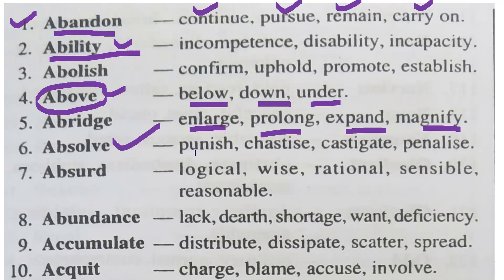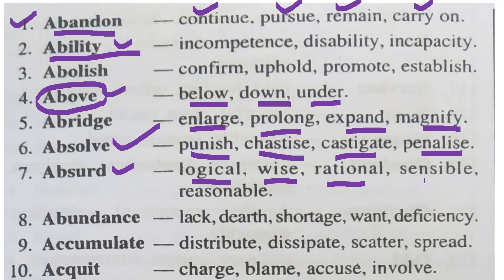Number six — absolved. The antonym of absolved is: punished, chastise, castigate, penalize. Number seven — absolute. The antonym of absolute is: logical, wise, rational, sensible, reasonable. Number eight — abundance. The antonym of abundance is: scarcity.